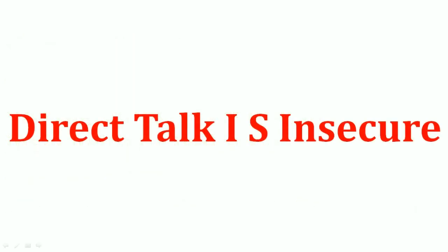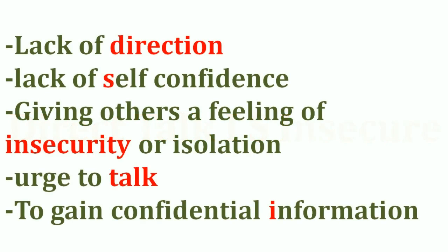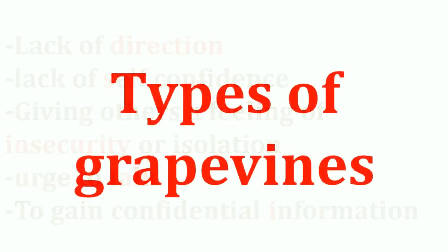The short trick is 'direct talk is insecure.' If you directly approach an unknown person and start talking, it feels insecure. So: D for lack of direction, talk for urge to talk, I for information (to gain confidential information), S for lack of self-confidence, and insecure for insecurity or isolation. Headings: lack of direction, lack of self-confidence, giving others a feeling of insecurity or isolation, urge to talk to gain confidential information.